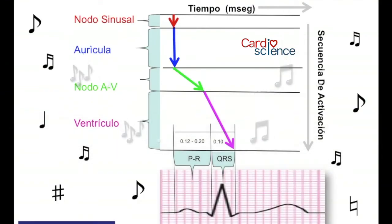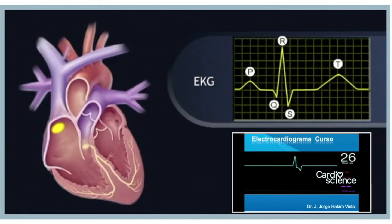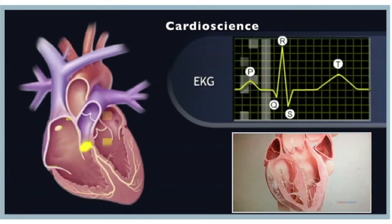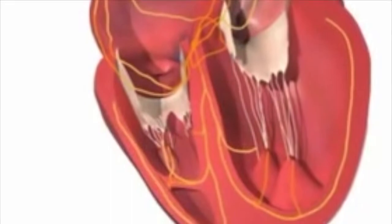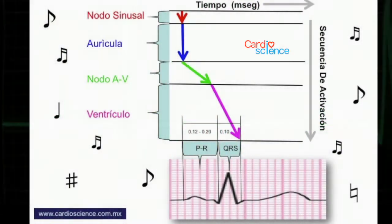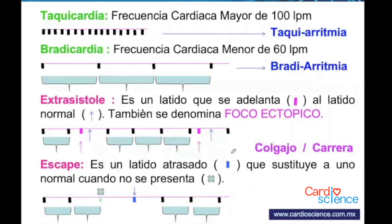La secuencia de activación habitualmente inicia en el nodo sinusal, a través de los haces internodales llega al nodo aurículo-ventricular, y de este pasa a través del tronco del haz de His y a los fascículos intraventriculares: la rama derecha y la rama izquierda con sus dos fascículos. La activación del nodo sinusal llega a activar la aurícula, luego el nodo AV, para que finalmente active a los ventrículos a través del sistema de Purkinje, produciendo la onda P, el PR y el QRS.